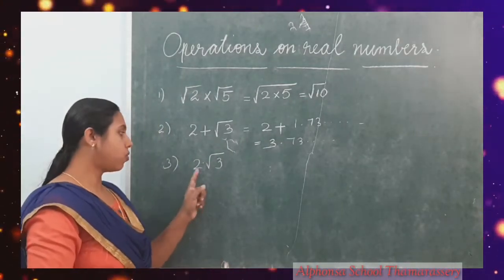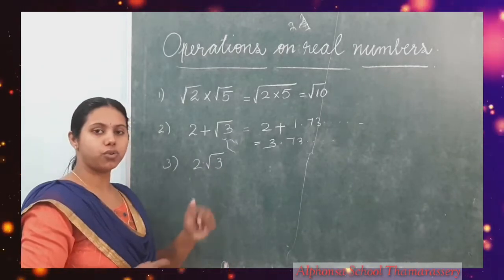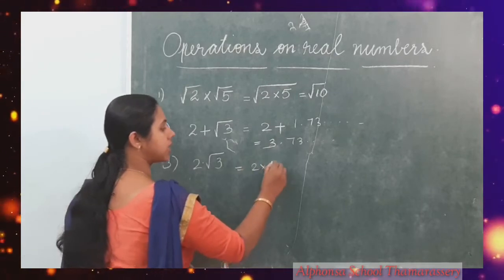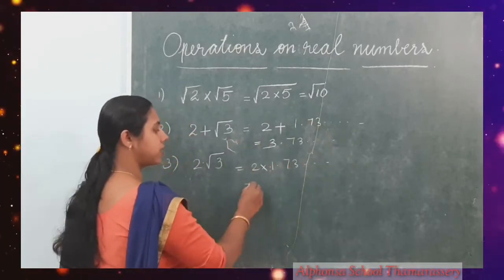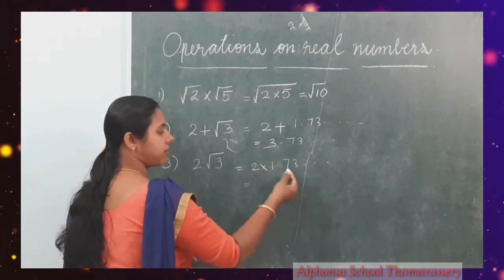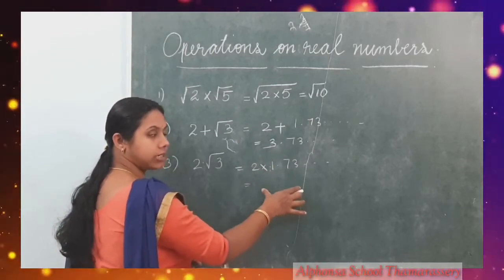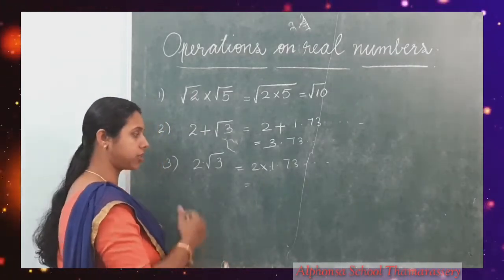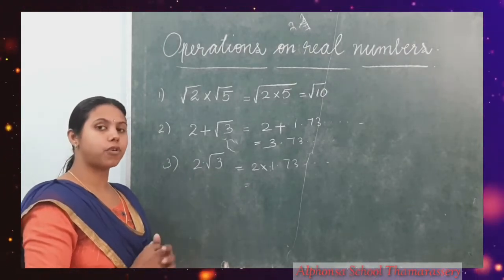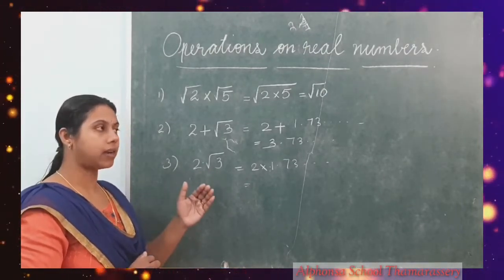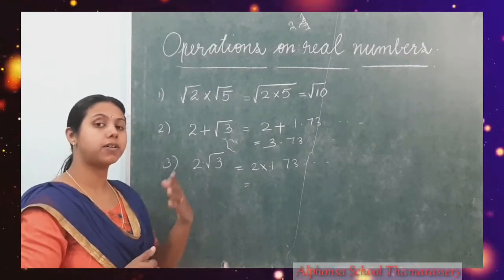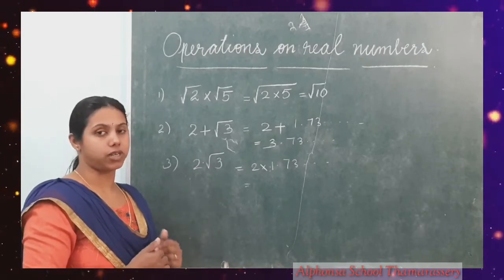Look at the next one. 2 root 3, that means 2 into root 3. Here also we will get the same. 2 into the value of root 3 — you can substitute 1.73 etc. So when you find the product, you will get another non-terminating, non-recurring decimal expansion. So it's also an irrational number.